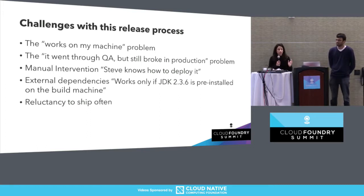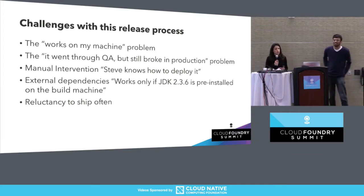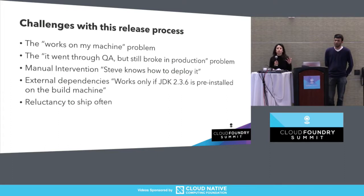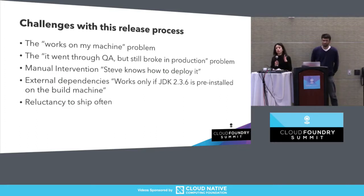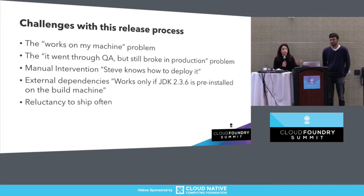The third problem is the external dependencies one — works only if JDK 236 or some other magic dependency has somehow appeared on the build machine. This is about implicit dependencies on things that pre-exist on the machine that the code doesn't package or explicitly mention. Finally, operators are often reluctant to ship often because they're scared, due to past experiences, that new features will break the stability of their existing production system.